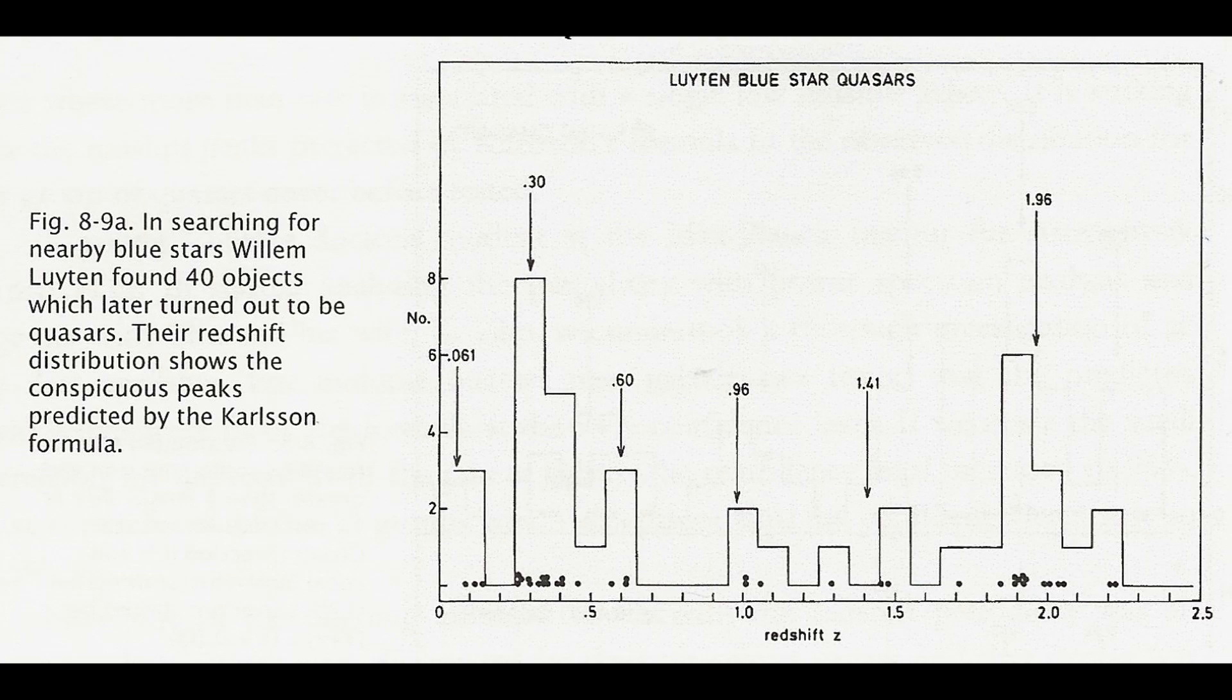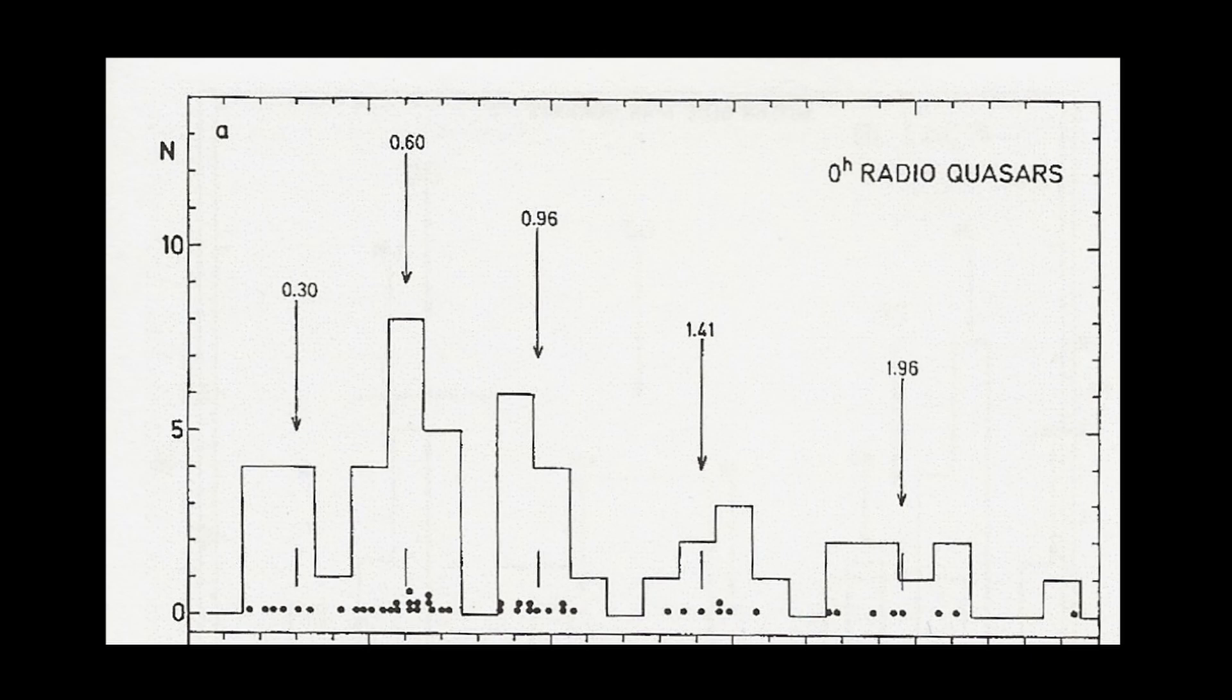If we compare this to the earlier radio quasar graph we can see that there the highest peaks are at 0.6 and 0.96 which would agree with the conclusion that they are the most luminous quasars that can be seen at greater distances.